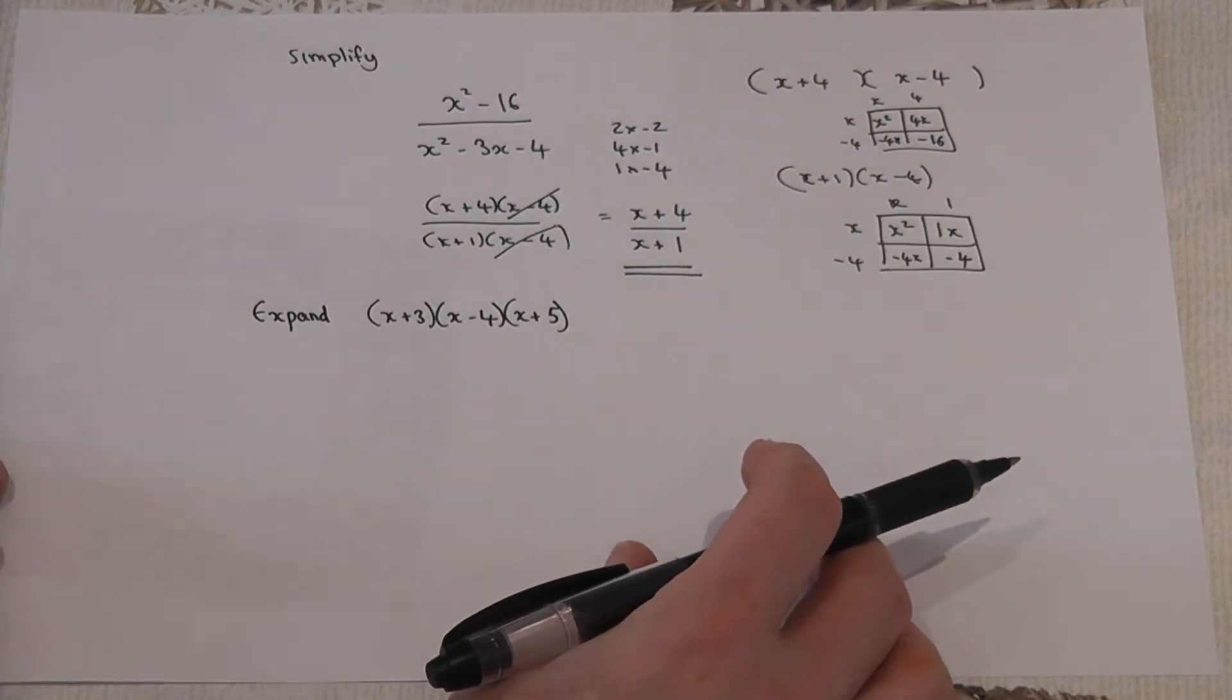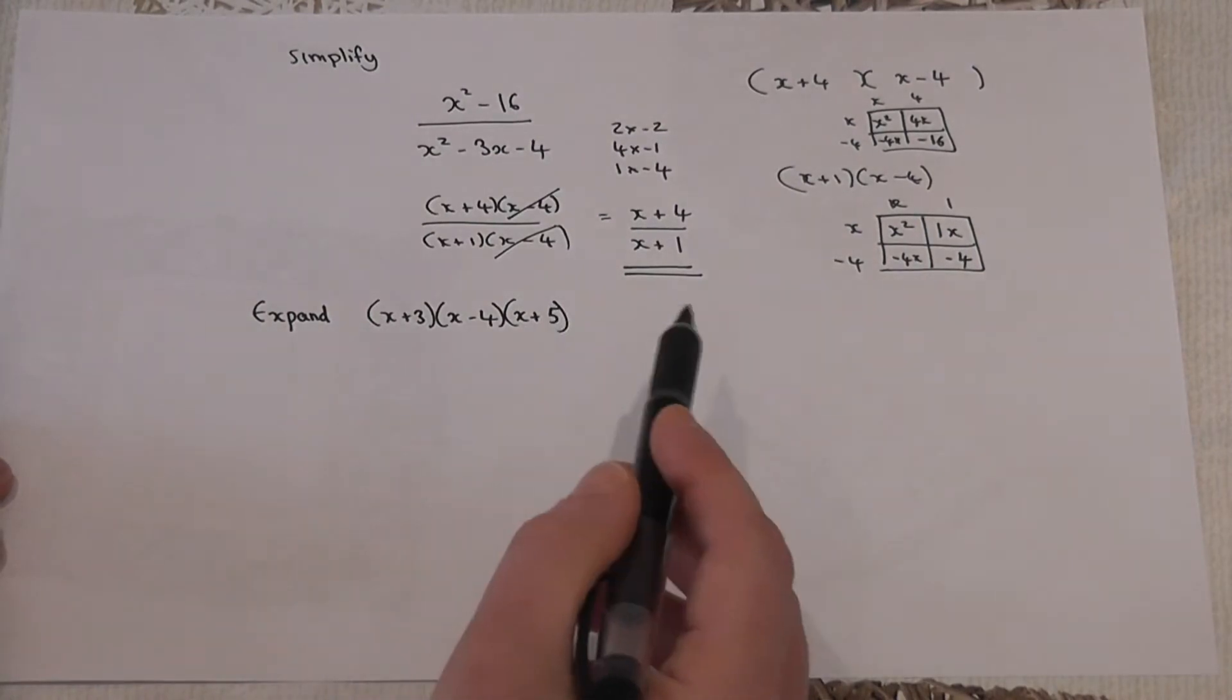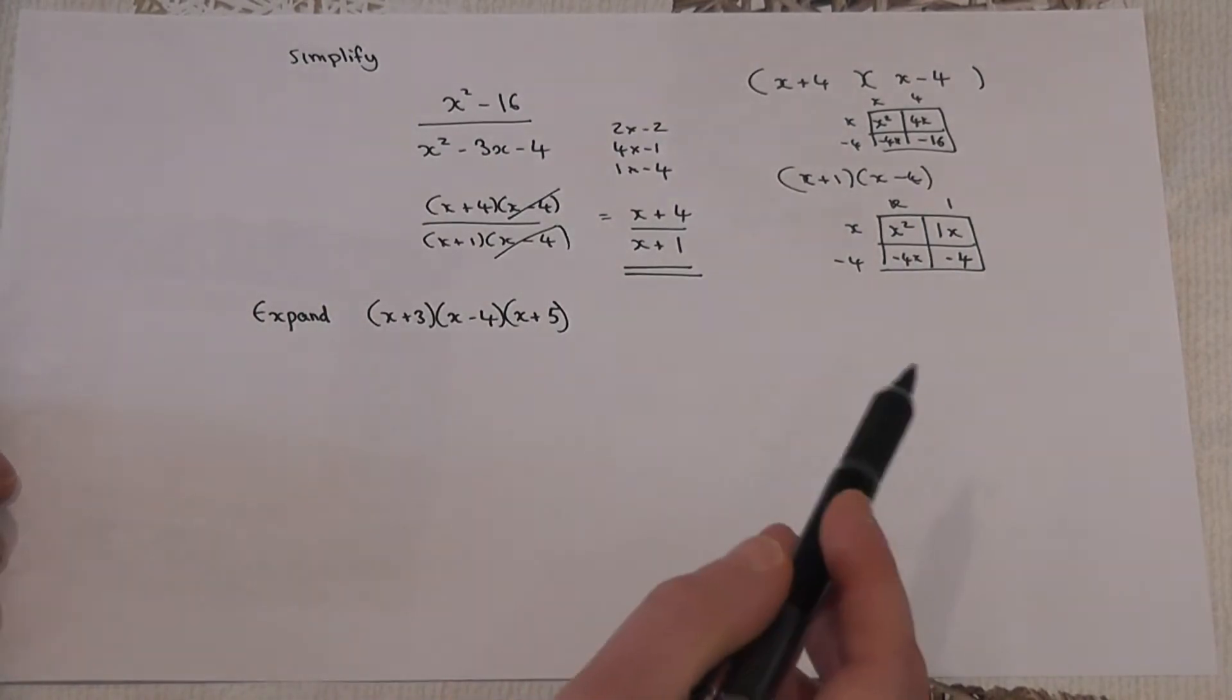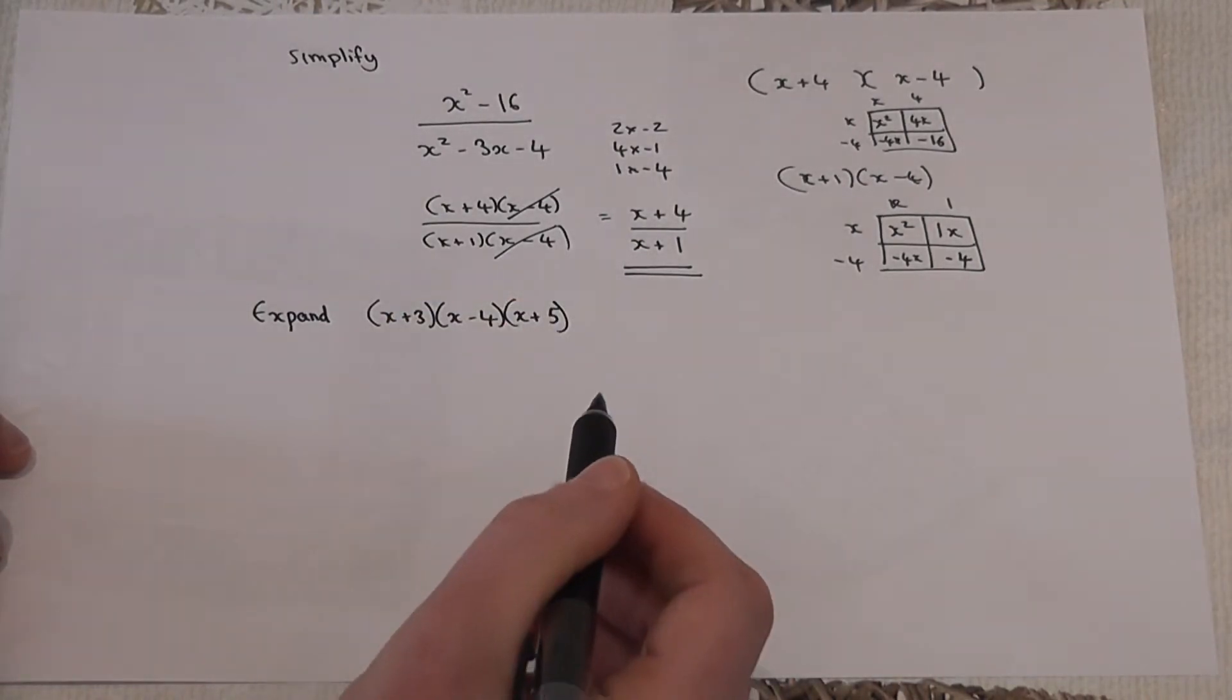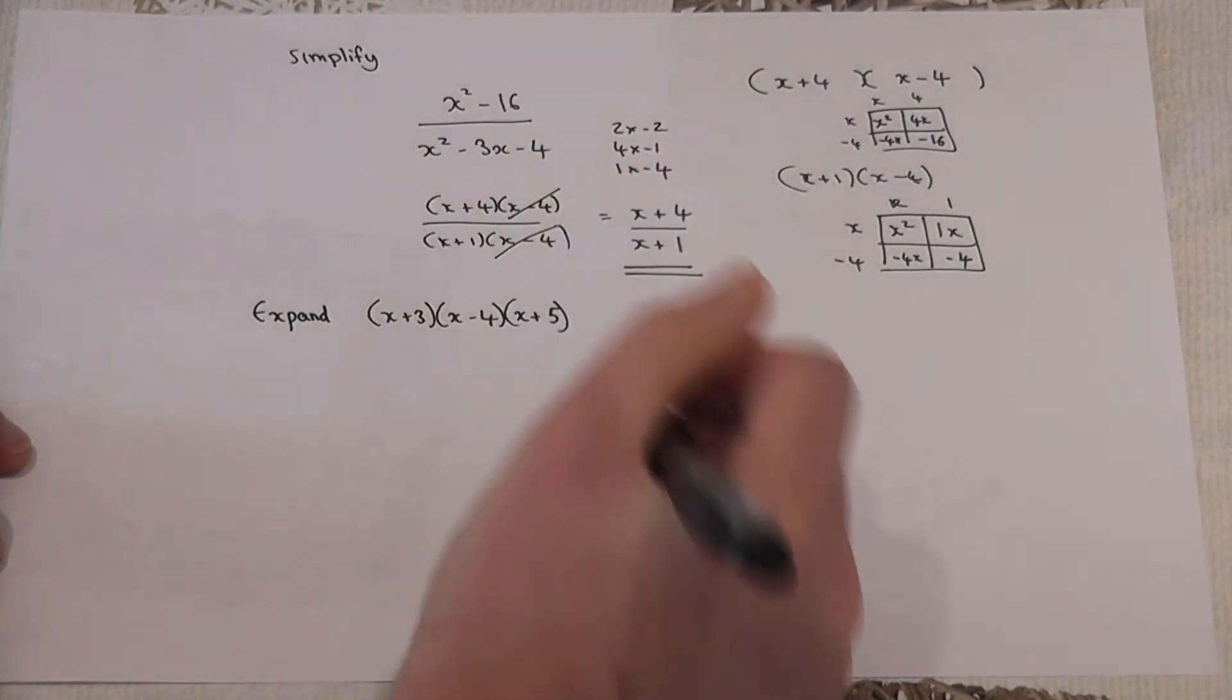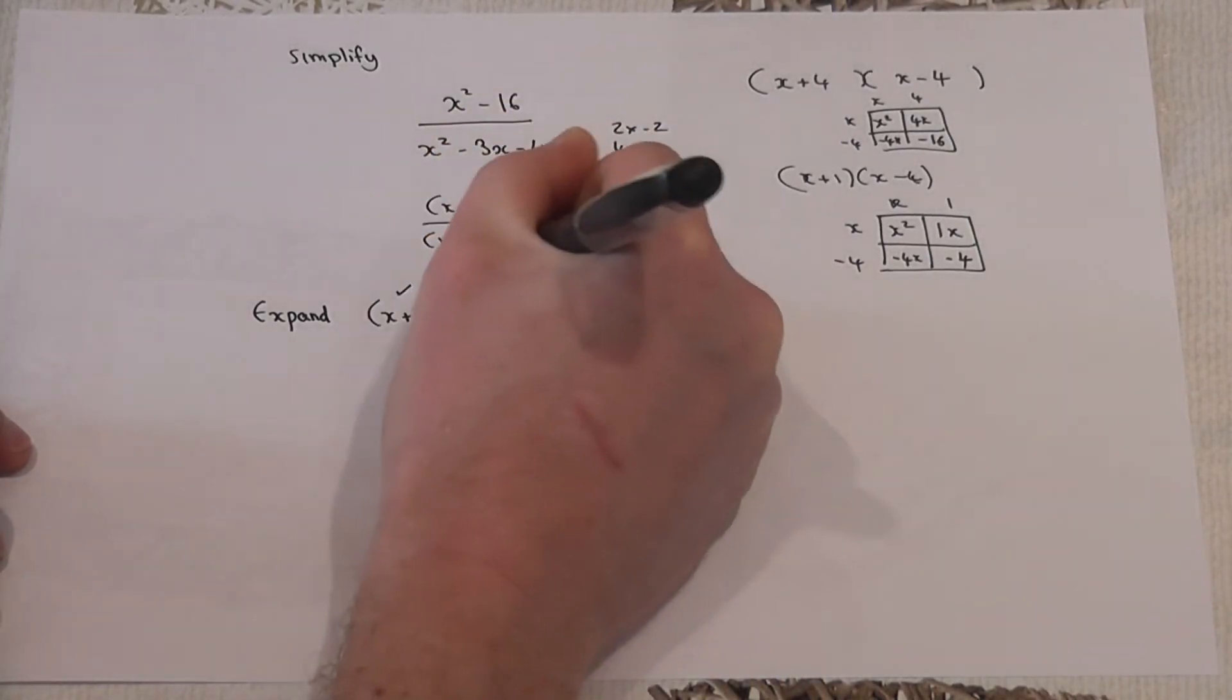Part B then asks us to expand three brackets. Lots and lots of techniques for expanding brackets. However, the trick to expanding three brackets is to multiply together two of the brackets first. I'll pick the first two.